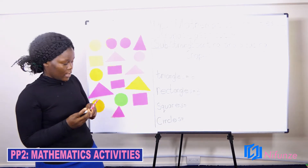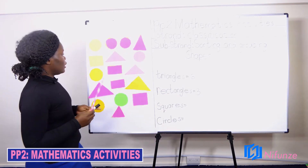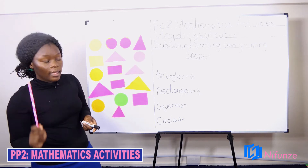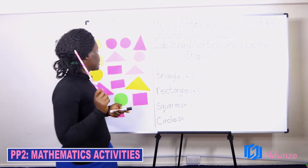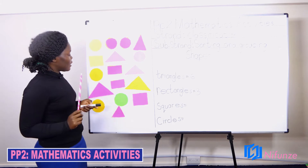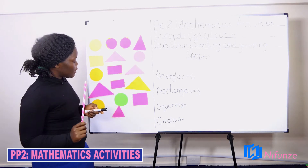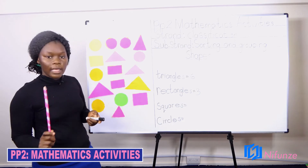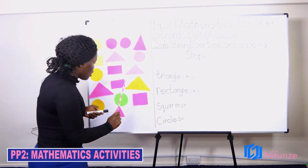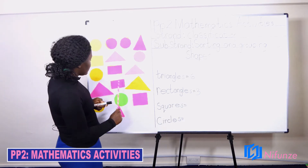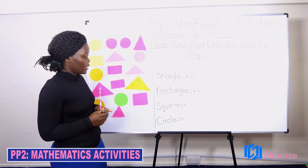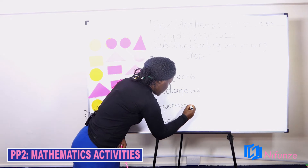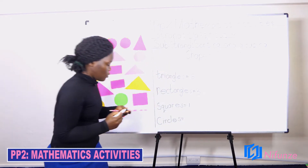We also have the squares. Let's sort the squares. Where are the squares? Where are the squares? Here they are. Here they are. Can you see the squares? Can you see the squares? Yes, yes, yes. How many squares do we see? We only have one square. The teacher writes number one to indicate the number of squares on the board.